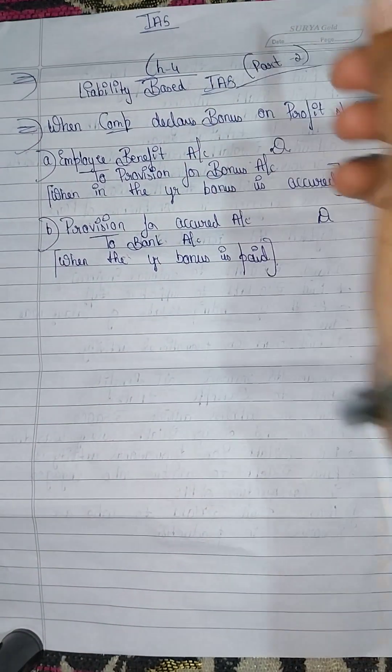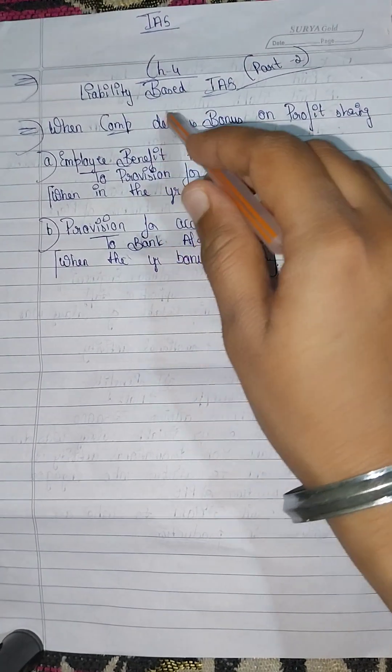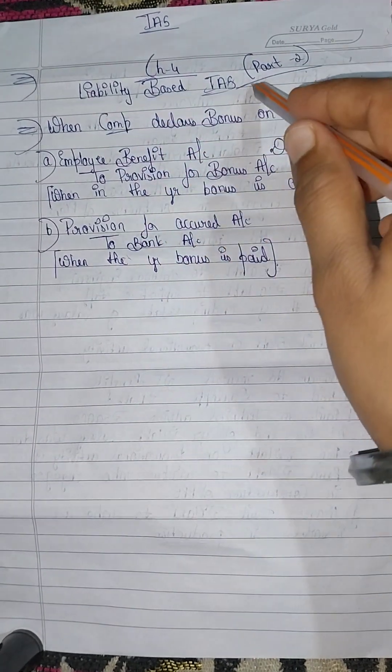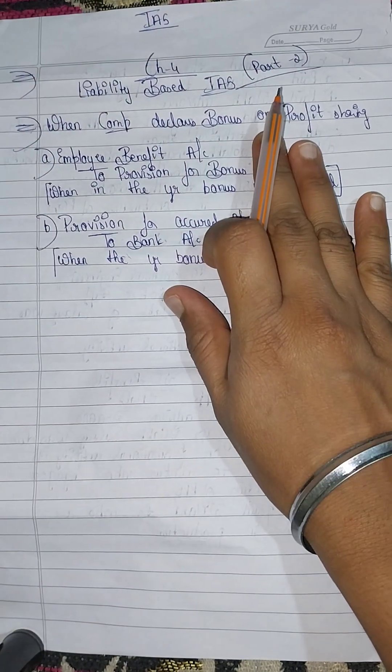I am going to explain the 5th subject. Chapter 4 is Liability Based Accounting Standards. I have already explained Part 1 in the previous video, so I am going to explain video Part 2.